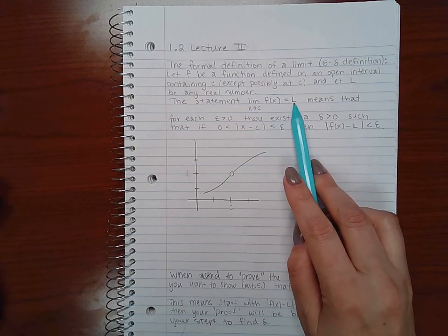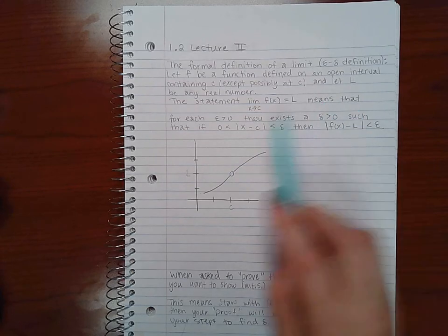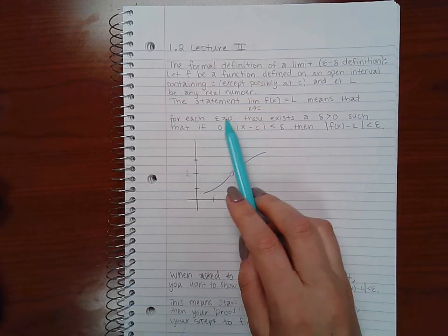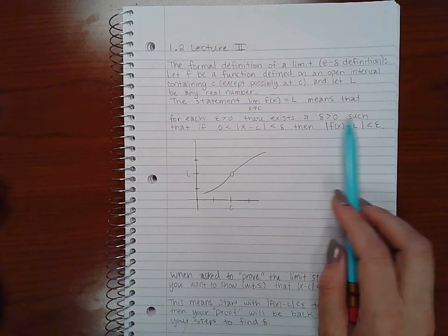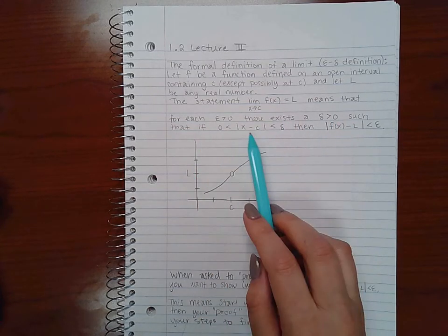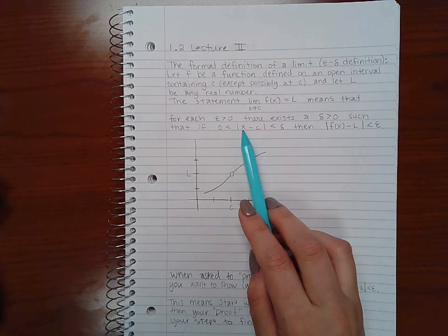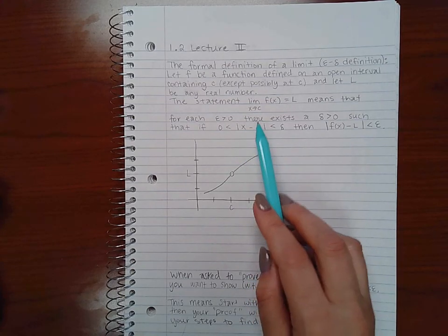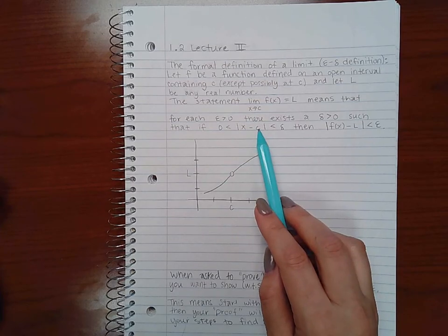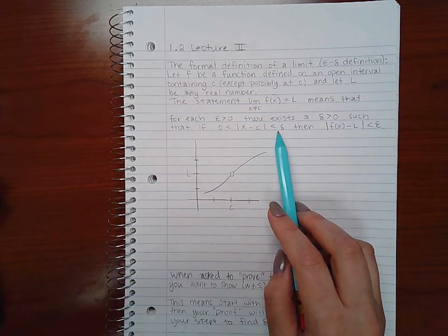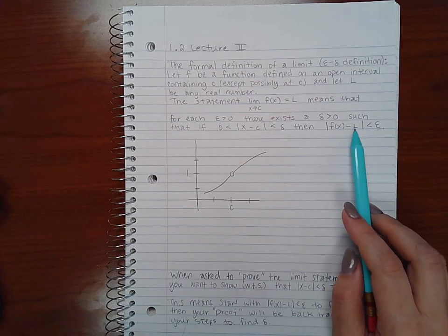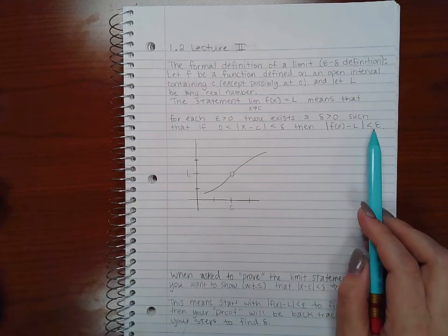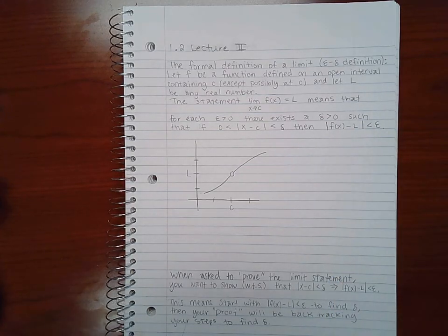The statement 'the limit of f of x as x goes to C equals L' means that for each epsilon greater than zero, there exists a delta greater than zero such that if the difference between the x value and C, this C that you're approaching, is less than delta, then the function value minus L, being the limit y value, that difference is also less than epsilon.